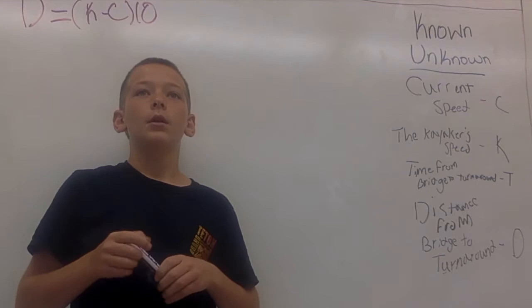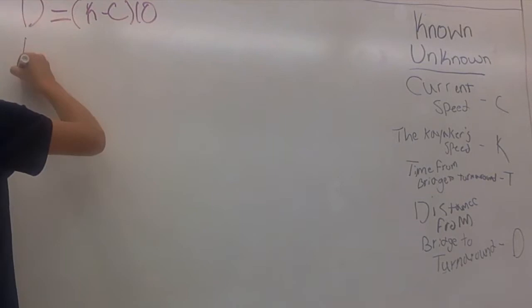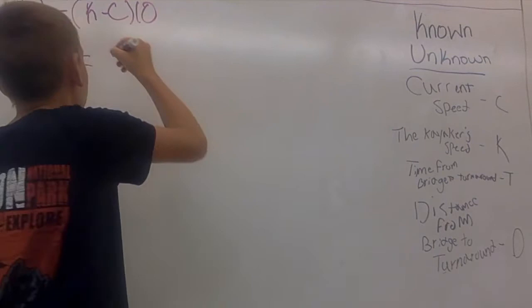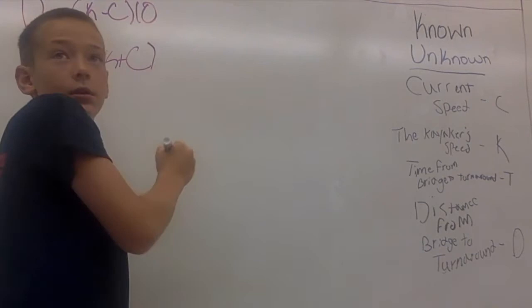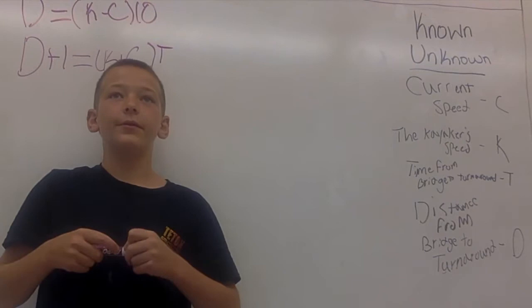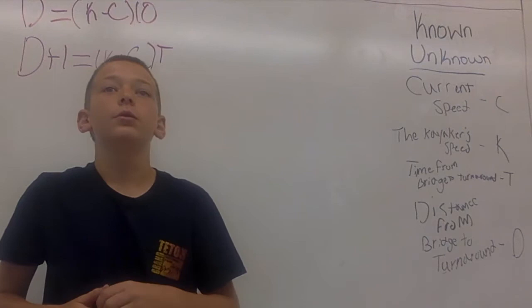Next math sentence will be D plus 1 equals (K plus C) times T. And that is for the distance from the bridge to the turnaround plus 1 mile equals the kayaker's speed plus the speed of the current times the amount of time it took him to get from the bridge to the turnaround.